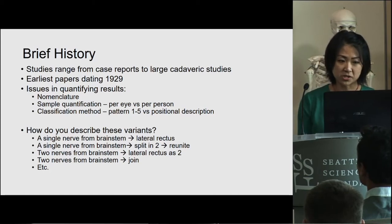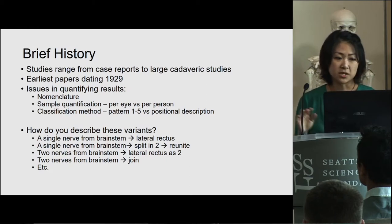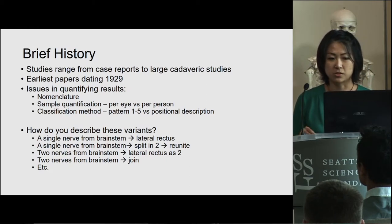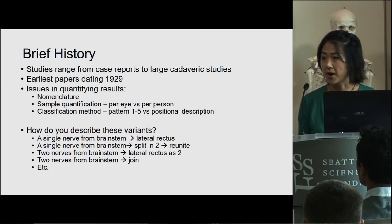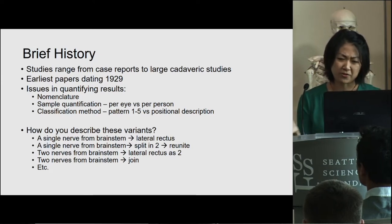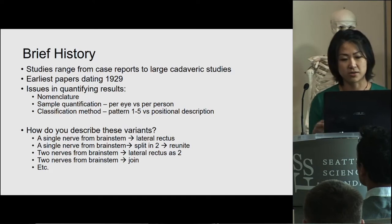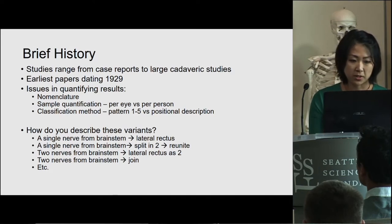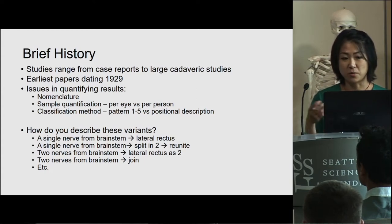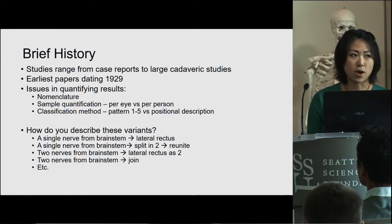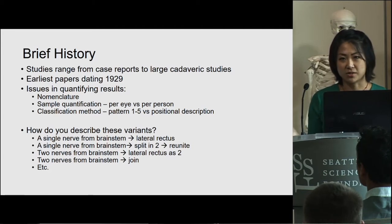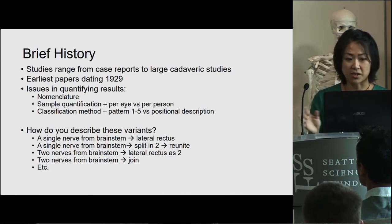A brief history: studies range from case reports to large cadaveric studies, with the earliest papers dating from 1929. However, going through the literature, there are issues in quantifying these results — namely the nomenclature. Several authors use different nomenclature to describe what they're seeing. One author will use 'branching,' another will use 'duplication,' so it's unclear what you're really talking about without a uniform nomenclature.